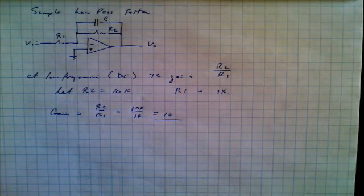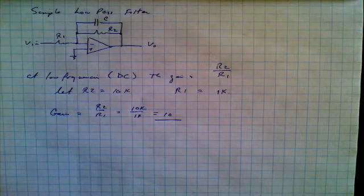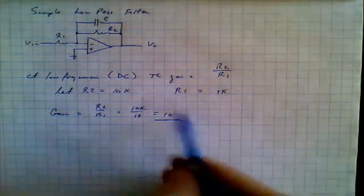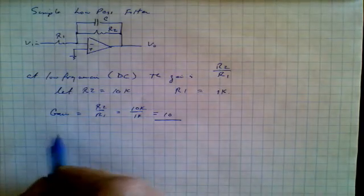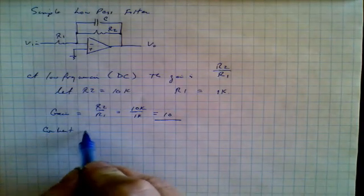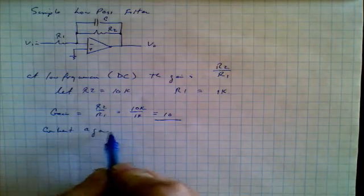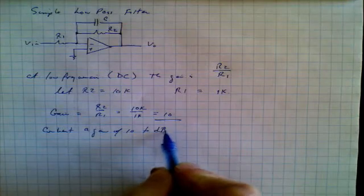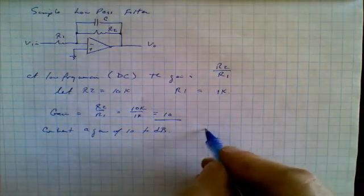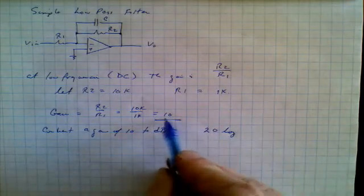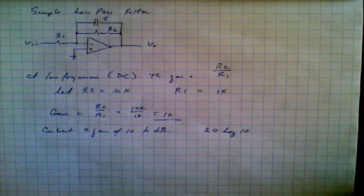But remember that we really want to use dBs when we're going to be plotting gain versus frequency characteristics. So to convert this to dBs, this is what we do. So convert a gain of 10 to dBs. So how do we do it? Well, we take 20 times the log of the gain, which in this case is 10.